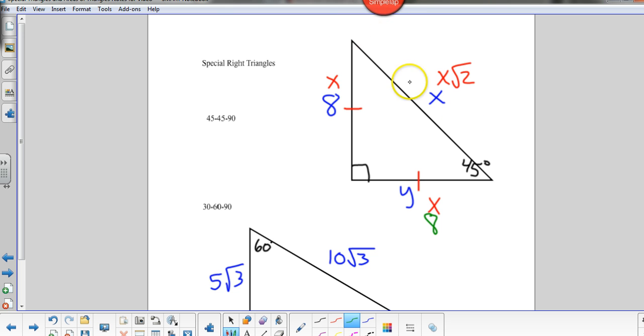And the side here that I did call x in blue is going to be 8 root 2. Now, if you did the Pythagorean theorem, you would still get the same answers. This would end up being root 128, which is 8 root 2.